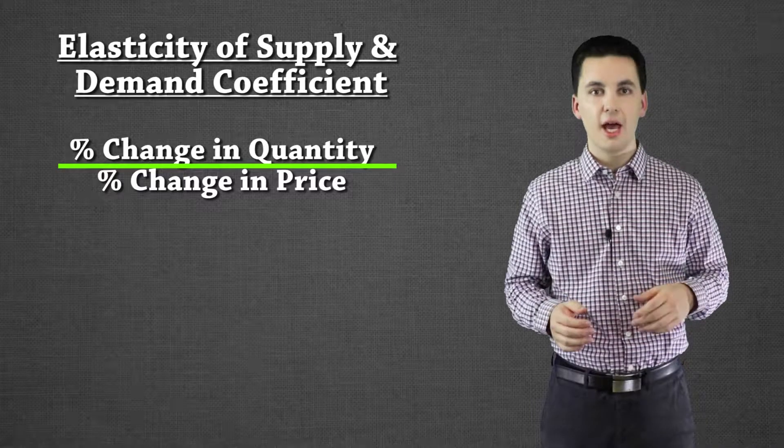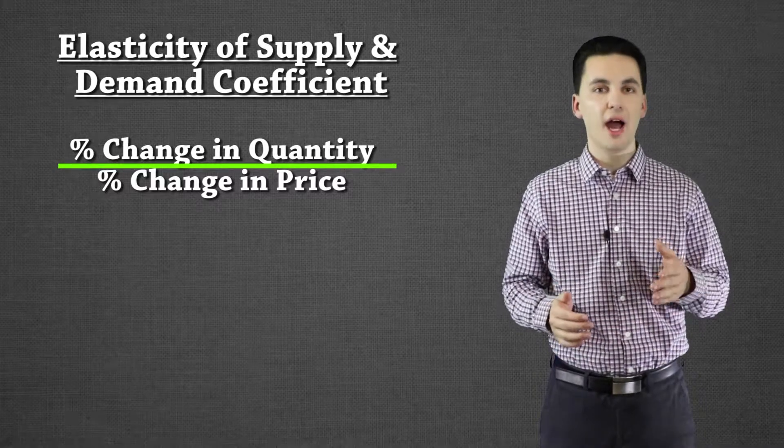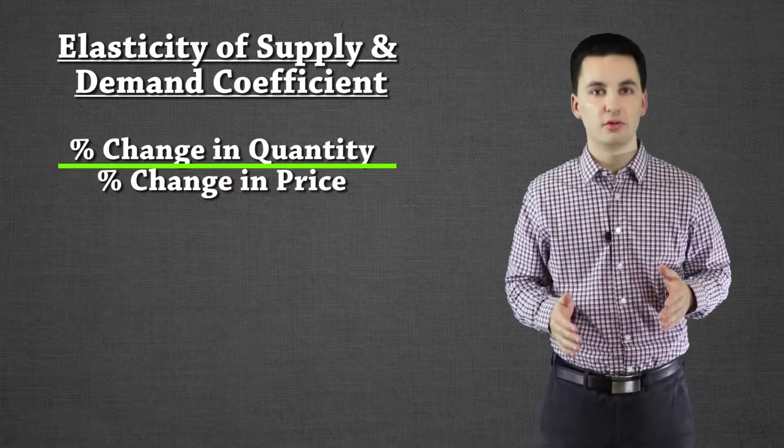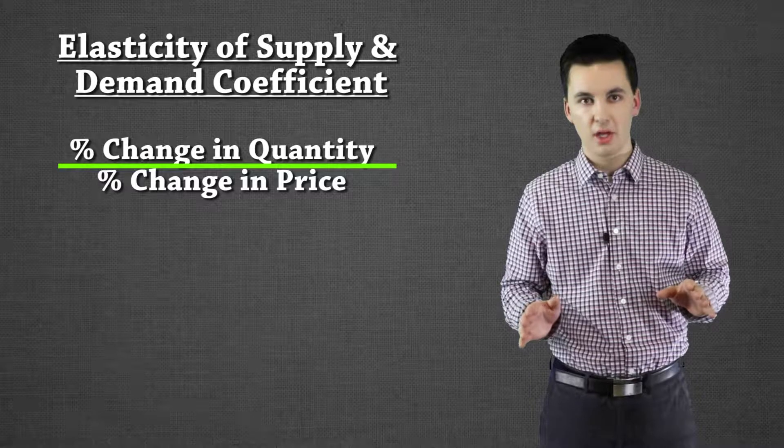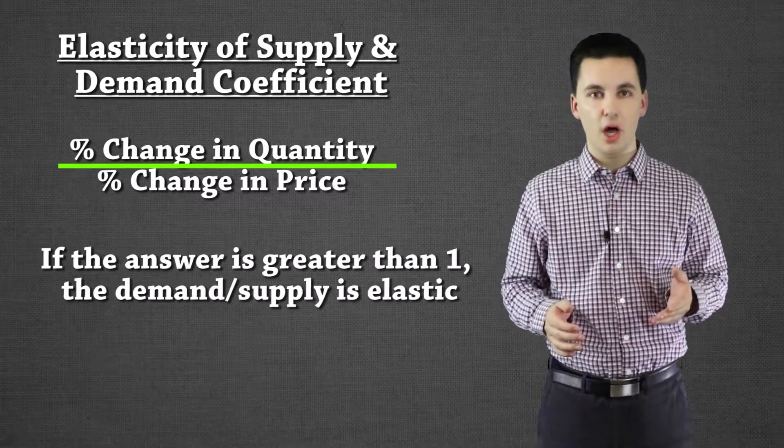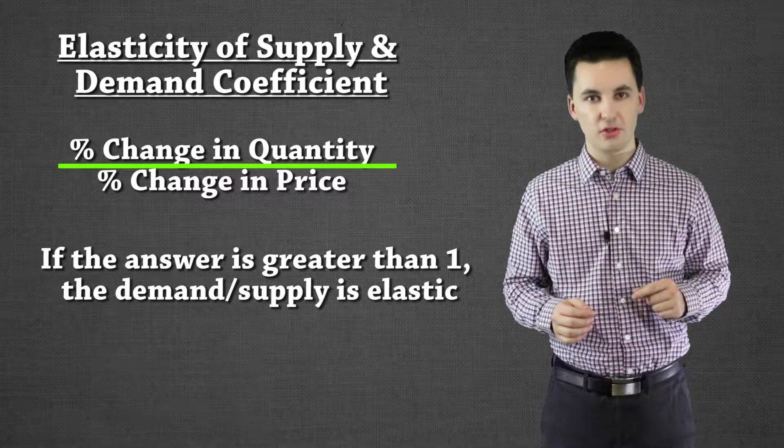In order to truly know how elastic or inelastic a demand or supply is, we need to do a little bit of math and use some coefficients. The formula is the same for both - it doesn't matter if I'm trying to figure out the quantity or the supply elasticity. You're going to take your percent change in quantity and divide it by our percent change in price. This is going to show us the relationship between our quantity and price and how sensitive our change in quantity is going to be to a change in price. What we'll get here is an absolute number, so we're not going to care about negatives. If our answer is greater than 1 it's going to be an elastic demand. The bigger the number the more elastic it is and the bigger the change is going to be to a change in price.